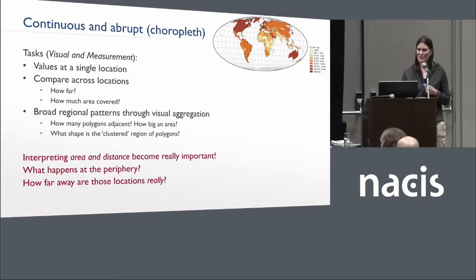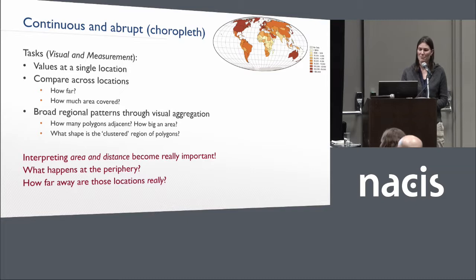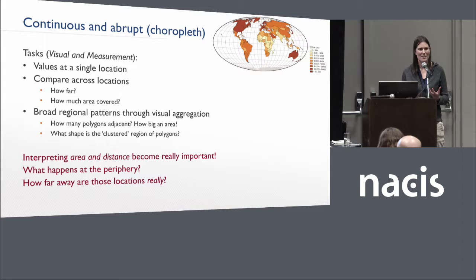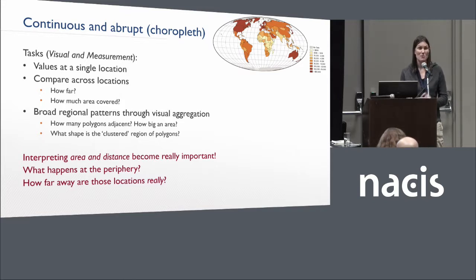We spend a lot of time talking about the problems of what happens at the periphery. Fritz showed a nice example of flow lines going across the edges on an interrupted map projection, and that's near and dear to my heart. The fact that the earth, being kind of spherical-ish, doesn't really have an edge. But on maps we have lots of edges, and it makes it really hard for people to wrap their heads around how far apart things really are — because of where you choose the center of your projection or where you draw the interruptions. That just makes people's brains hurt, so we should be thinking very carefully about the periphery at all times.